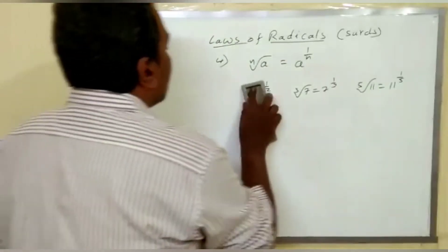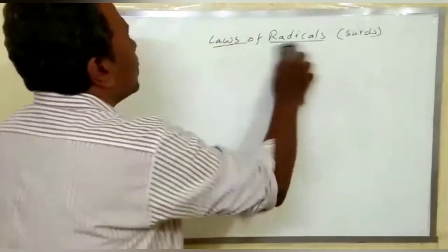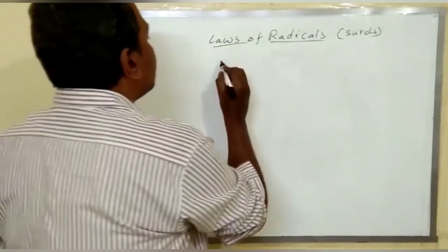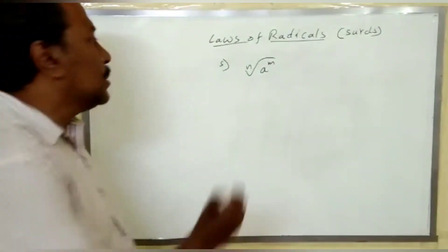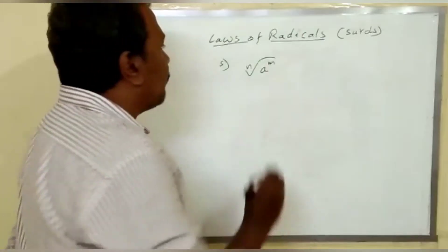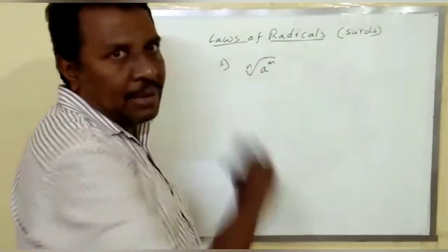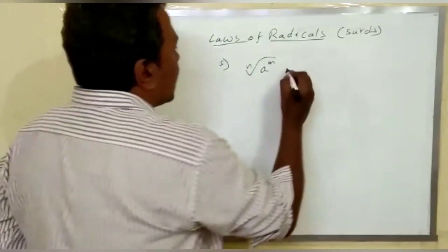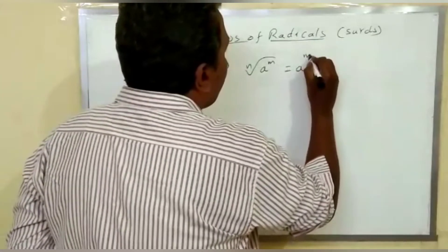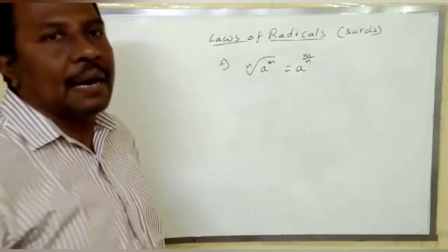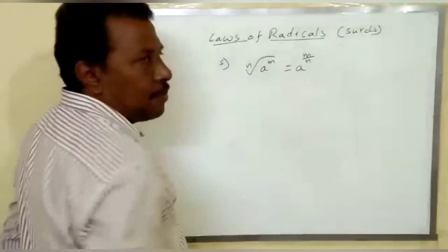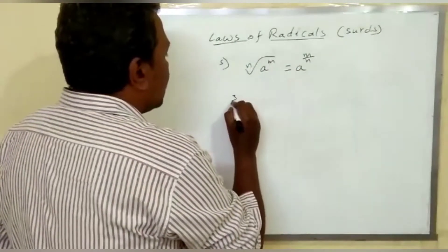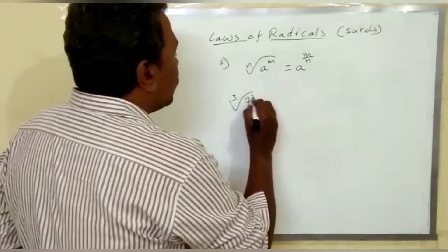Now the fifth law. The nth root of a power m — that is, what happens if a radical possesses a power — can be written as a power m by n. This power will be the numerator and the order becomes the denominator. For example, cube root of 7 power 2 equals 7 power 2 by 3.